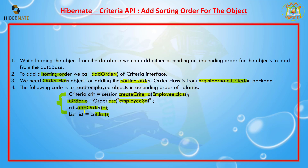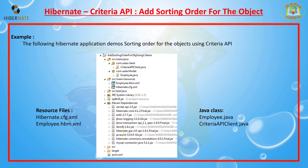To summarize the steps: first, create a Criteria object; then create an Order object; add that Order object to your criteria using addOrder(); and finally call the list() method, which returns the criteria results.